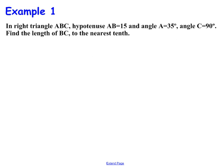So our first example, in right triangle ABC, hypotenuse AB equals 15, and angle A equals 35 degrees, and angle C equals 90 degrees, find the length of BC to the nearest tenth.